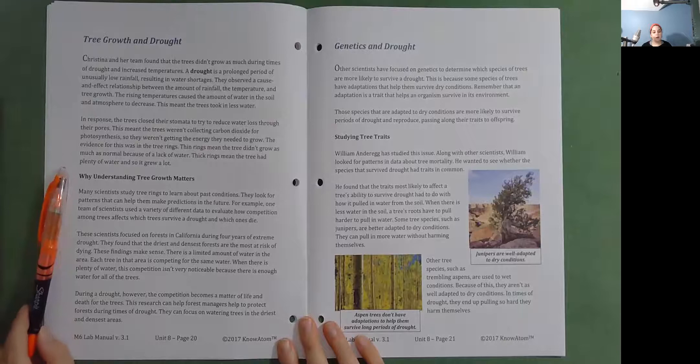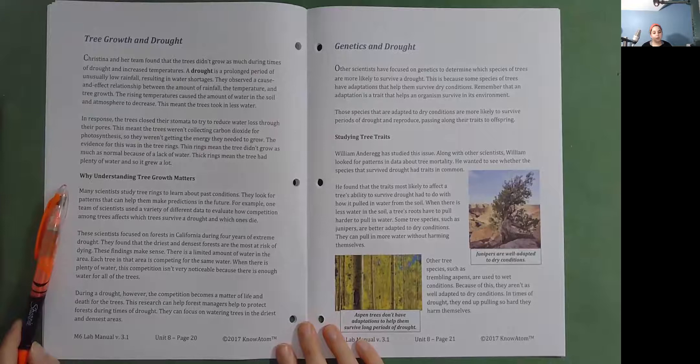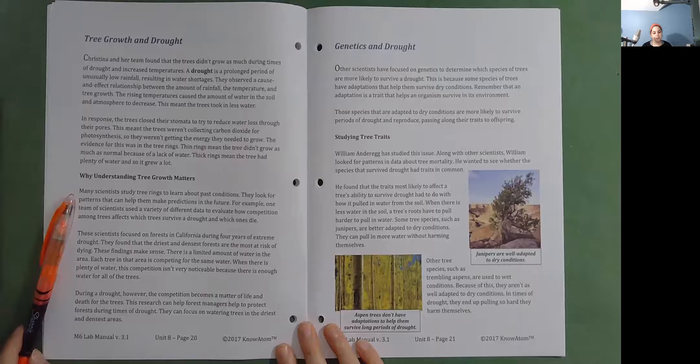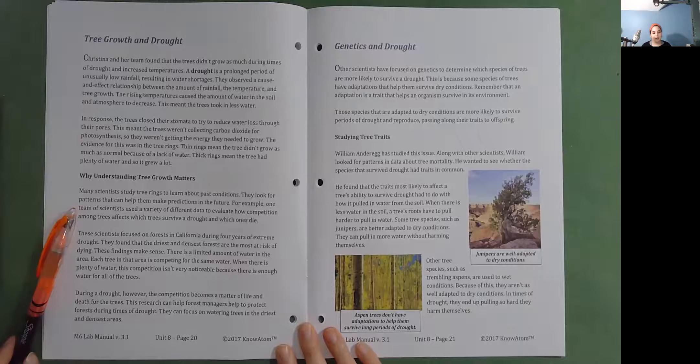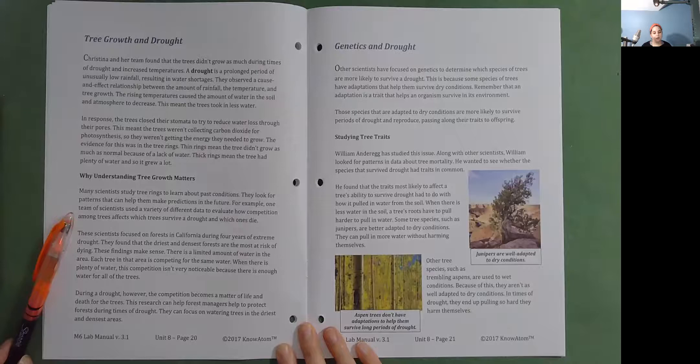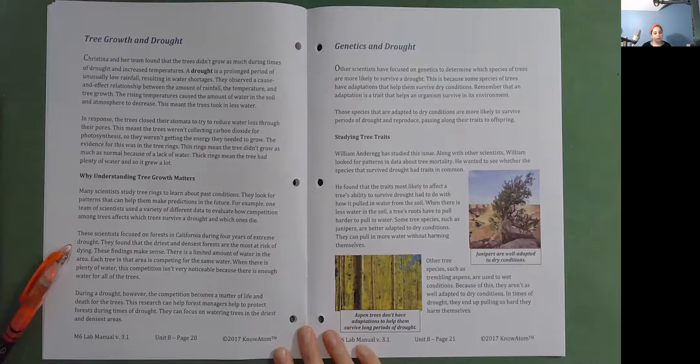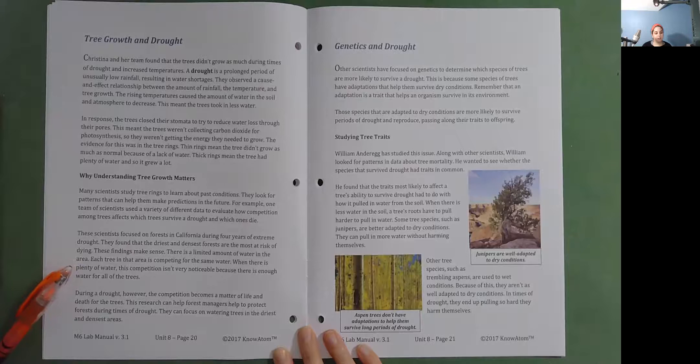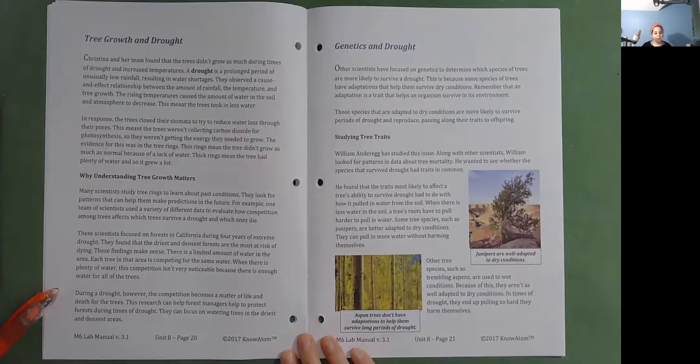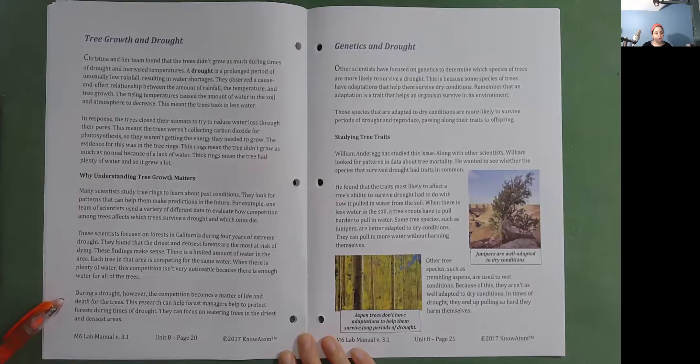Why understanding tree growth matters. Many scientists study tree rings to learn about past conditions. They look for patterns that can help them make predictions in the future. For example, one team of scientists used a variety of different data to evaluate how competition among trees affects which trees survive a drought and which ones die. These scientists focused on forests in California during four years of extreme drought. They found that the driest and densest forests are the most at risk of dying. These findings make sense. There is a limited amount of water in the area. Each tree in that area is competing for the same water. When there is plenty of water, this competition isn't very noticeable because there is enough water for all of the trees. During a drought, however, the competition becomes a matter of life and death for the trees. This research can help forest managers protect forests during times of drought. They can focus on watering trees in the driest and densest areas.